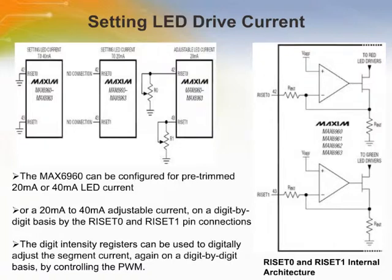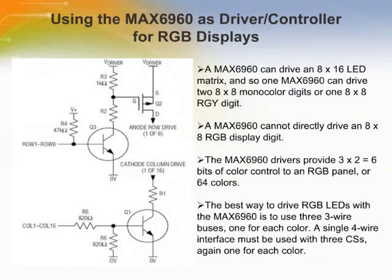The MAX6960 can be configured for pre-trimmed 20mA or 40mA LED current. It can drive up to 40mA of current, which can be set using the RSET0 and RSET1 pins. MAX6960 can be used to drive red-green-blue displays and can drive an 8x16 LED matrix. One MAX6960 can drive two 8x8 monocolor digits or one 8x8 red-green-yellow digit, but a MAX6960 cannot directly drive an 8x8 red-blue display digit. The MAX6960 drivers provide 3x2 six bits of color control to a red-green-blue panel.